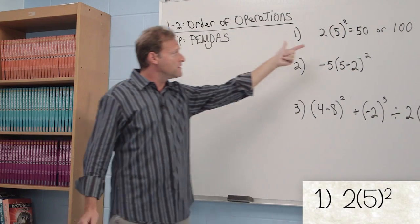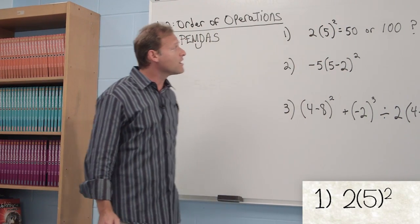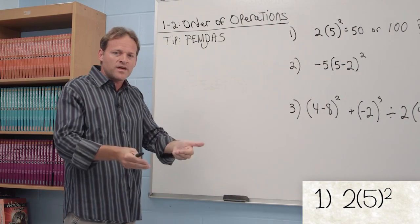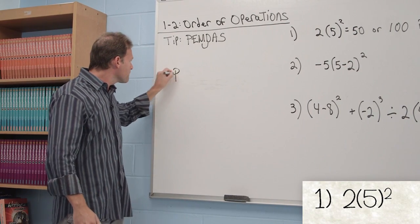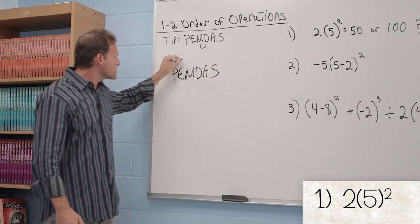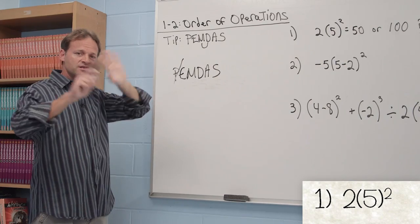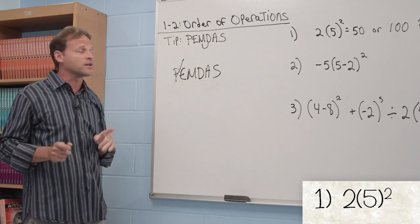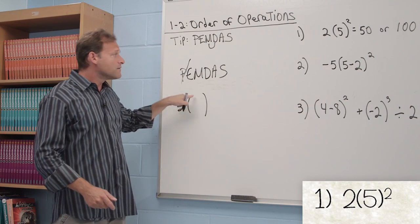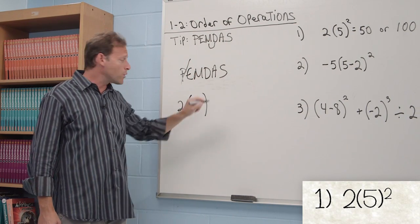We have PEMDAS. We're going to start with parentheses. For this problem here, we have a 5. Yes, there is a 5 in parentheses, but we can't do anything within it. Therefore, we could just scrape out the P. Parentheses, for all intents and purposes, are done. Now we go to the exponents. 5 squared means 25.